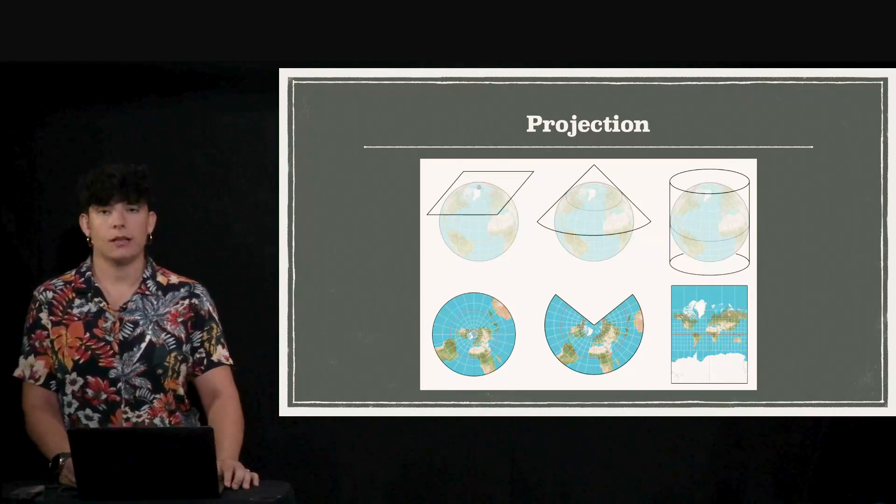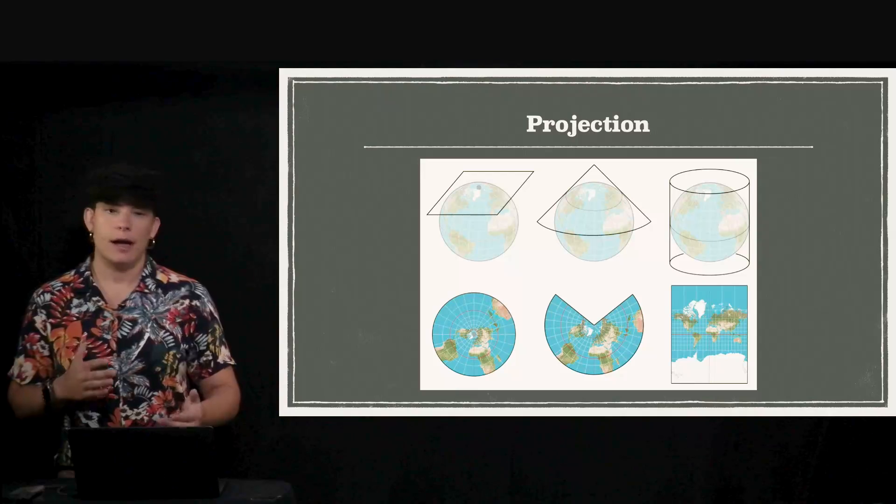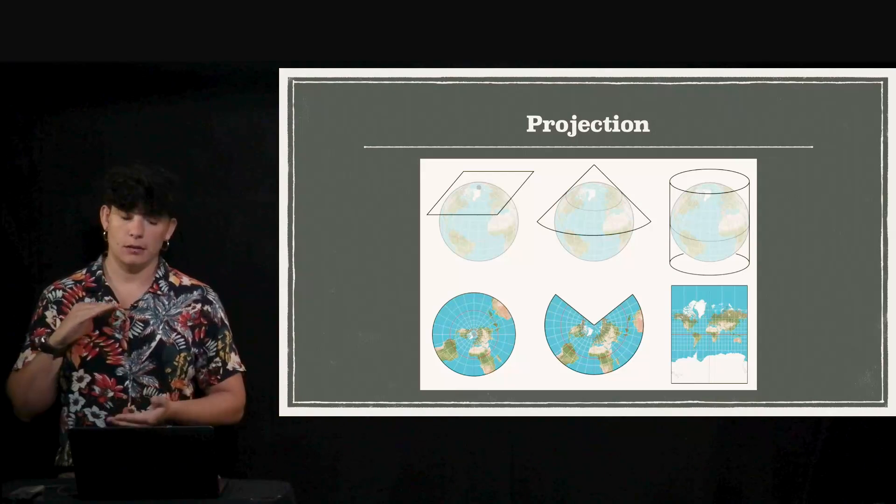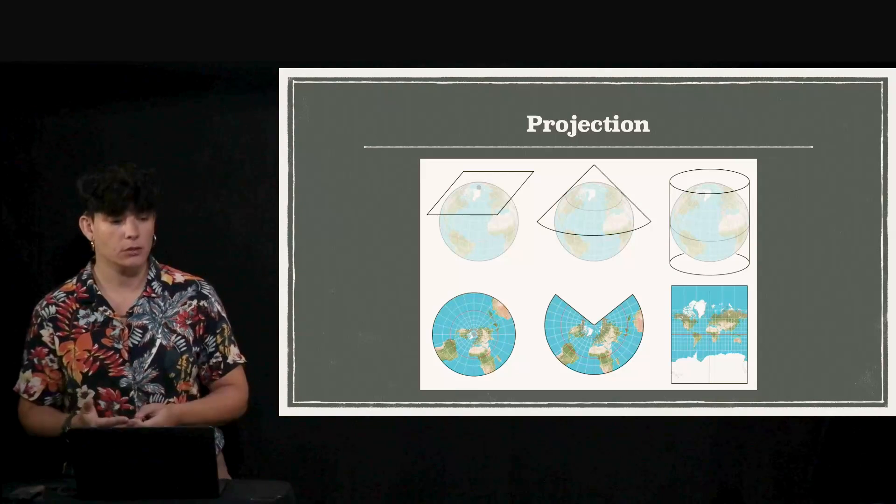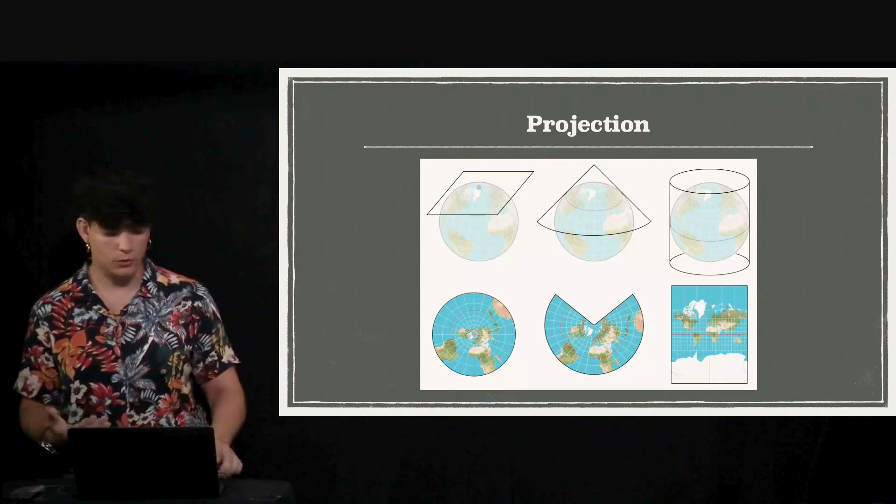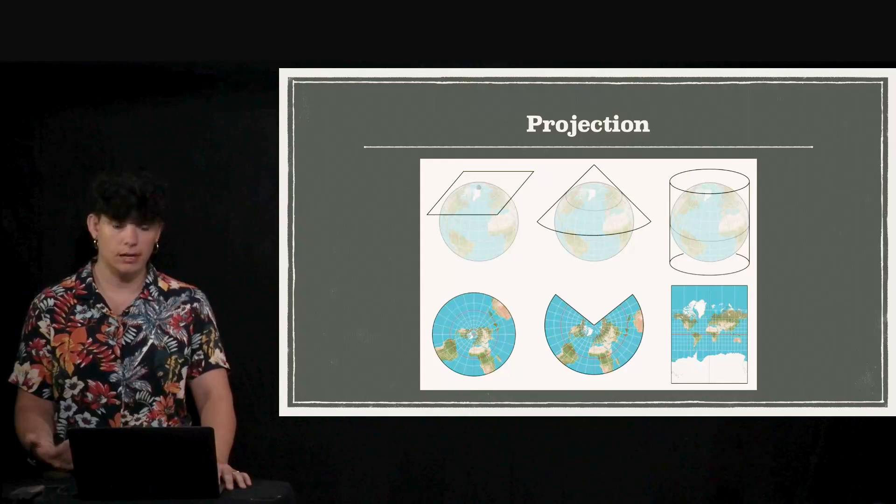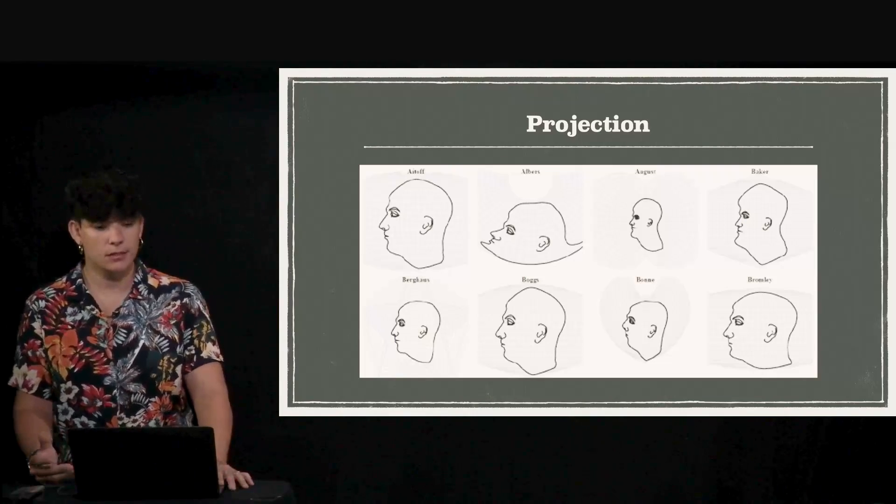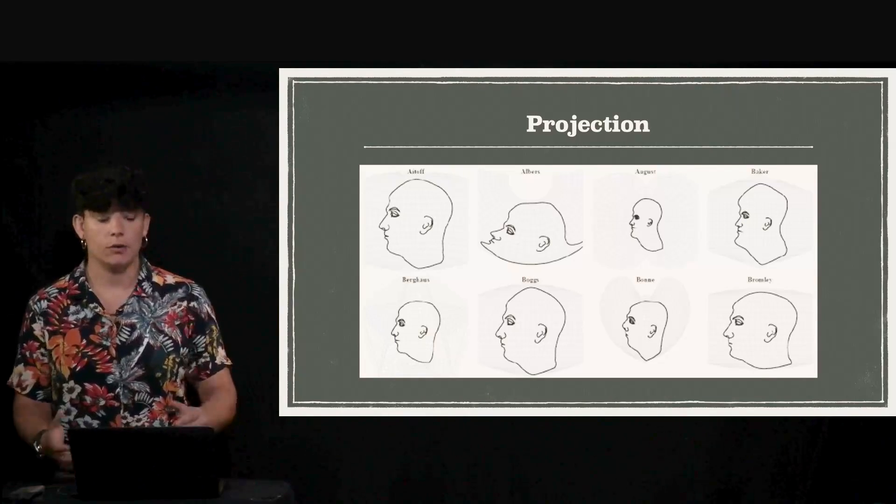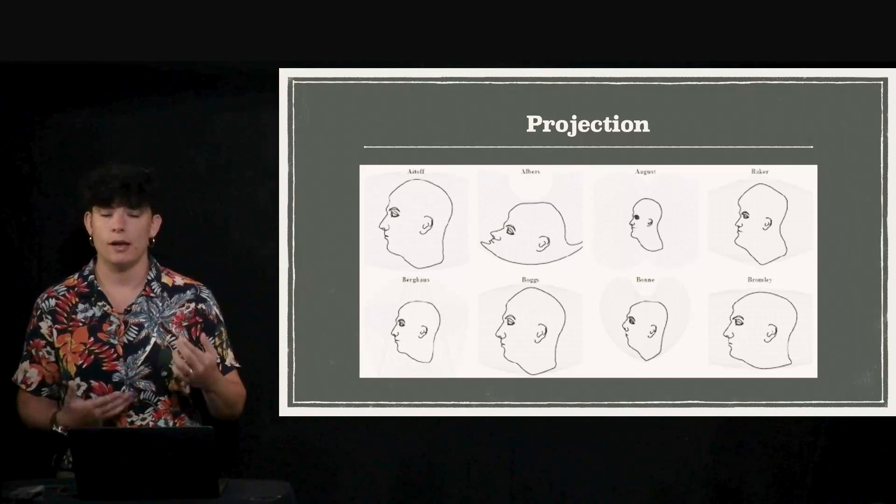Each representation has its pros and cons. For example, if we are more interested in having accurate shapes at the poles, we would use one projection, but if we want to see the whole globe accurately, maybe we choose something else. But that has implications in how the shapes look like. For example, this is the same face but it can be transformed or deformed depending on how we are representing it.